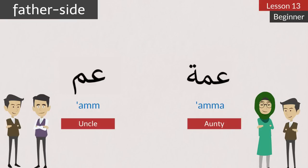In English, the uncle and aunt from the father's side and the mother's side are the same, but in Arabic it is different. Let's see. Am — uncle from the father's side, and Amma — aunt from the father's side. Let's repeat. Am — uncle, Amma — aunt.